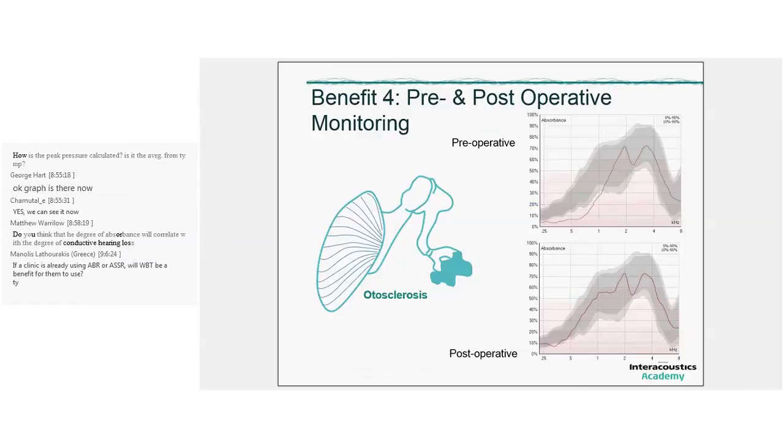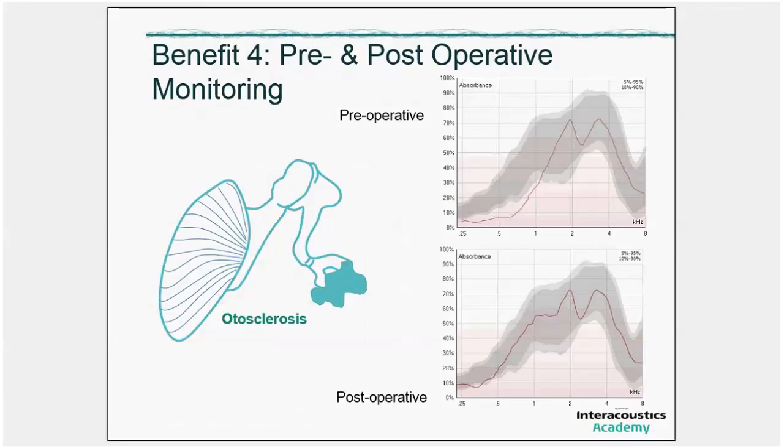Benefit number four about pre- and postoperative monitoring. What we see here is an otosclerotic ear and before the operation we could do a measurement with absorbance. And now this measurement is done without adding pressure. We have two wideband tympanometry tests in the Titan Suite. One is the 3D measurement and the other one is a measurement for ambient pressure. If you do it at ambient pressure, then it is relatively safe to do the measurement also shortly after the operation. Doctors do not like to put the middle ear under pressure shortly after the operation, but Titan will keep the pressure at ambient pressure. And maybe during or shortly after the operation you can already get an indication about if the operation has been successful.